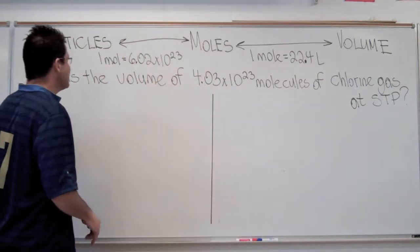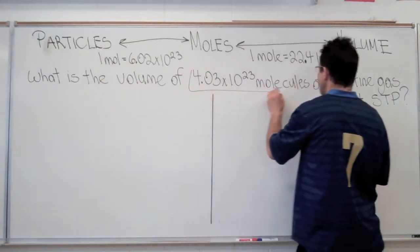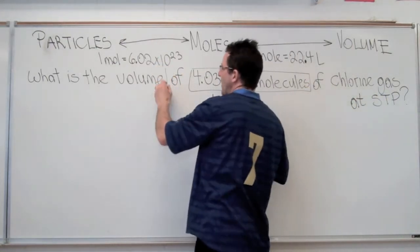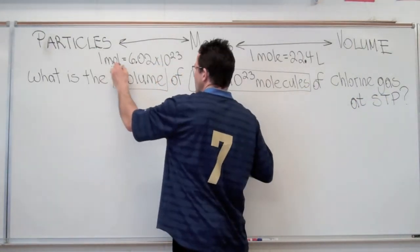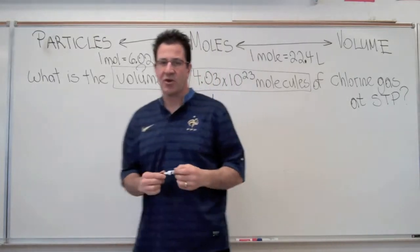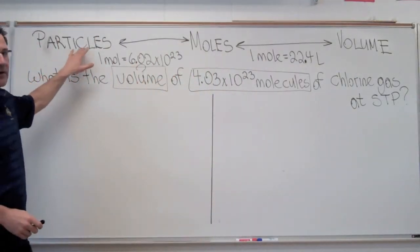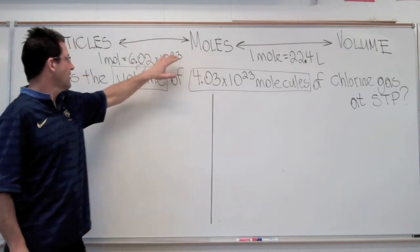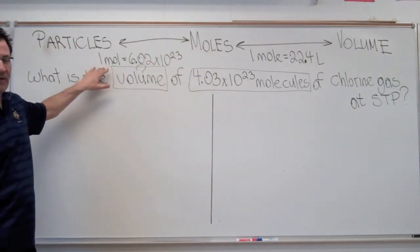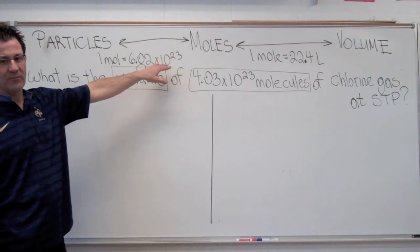We've been given molecules, which is particles, and we're going to try to find the volume. We're going to start with particles and convert to moles first using Avogadro's number — one mole is 6.02 times 10 to the 23rd particles.